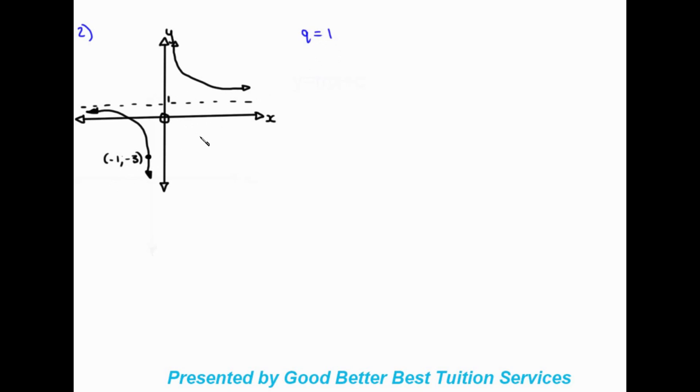Moving on to example two, we are given a horizontal asymptote of one, so we know that q is equal to one. We've also been given a point on the graph: minus one and minus three. Because we have an asymptote we can write out our standard form including the q value, so it's y is equal to a over x plus q.